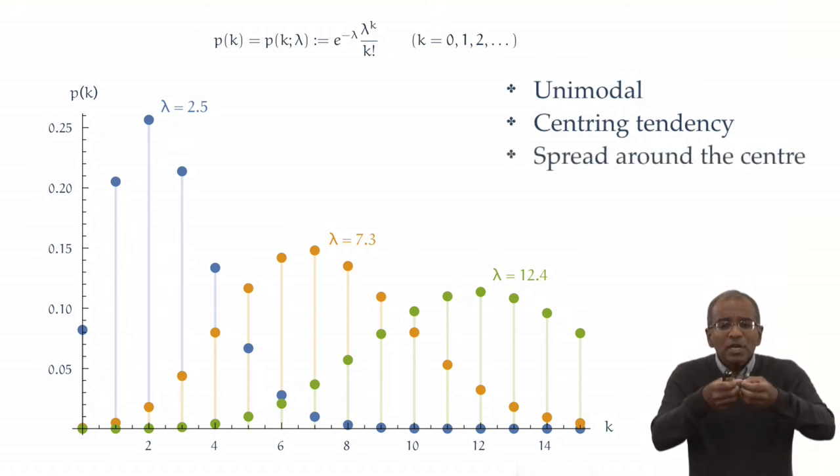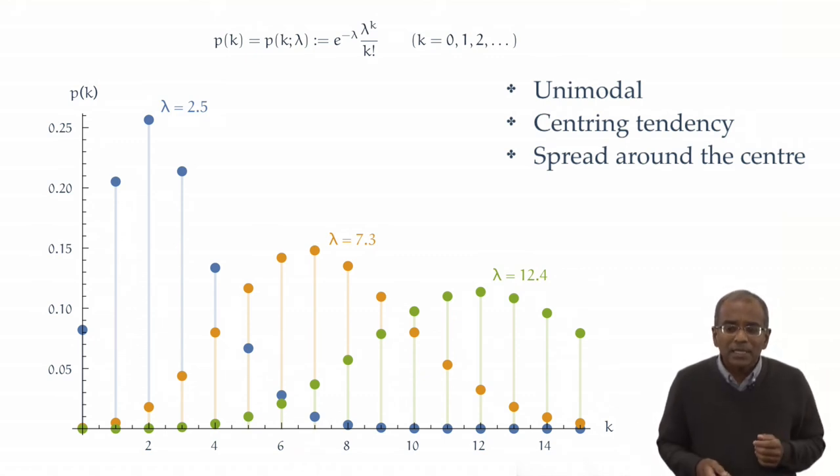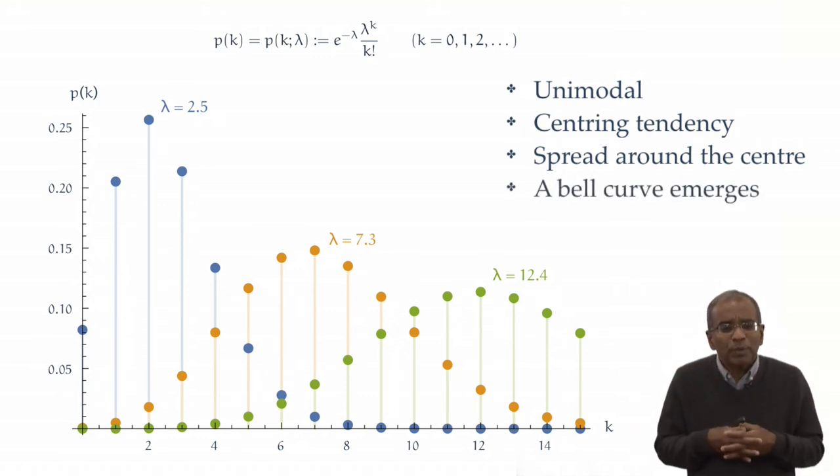The distribution is spread out around the center of mass, around the expectation, and the spread seems to increase as the parameter lambda increases. And finally, there is a bell curve which looks like an approximation to these probabilities. And of course, none of these are accidental, and we will turn to examining each of these properties next.